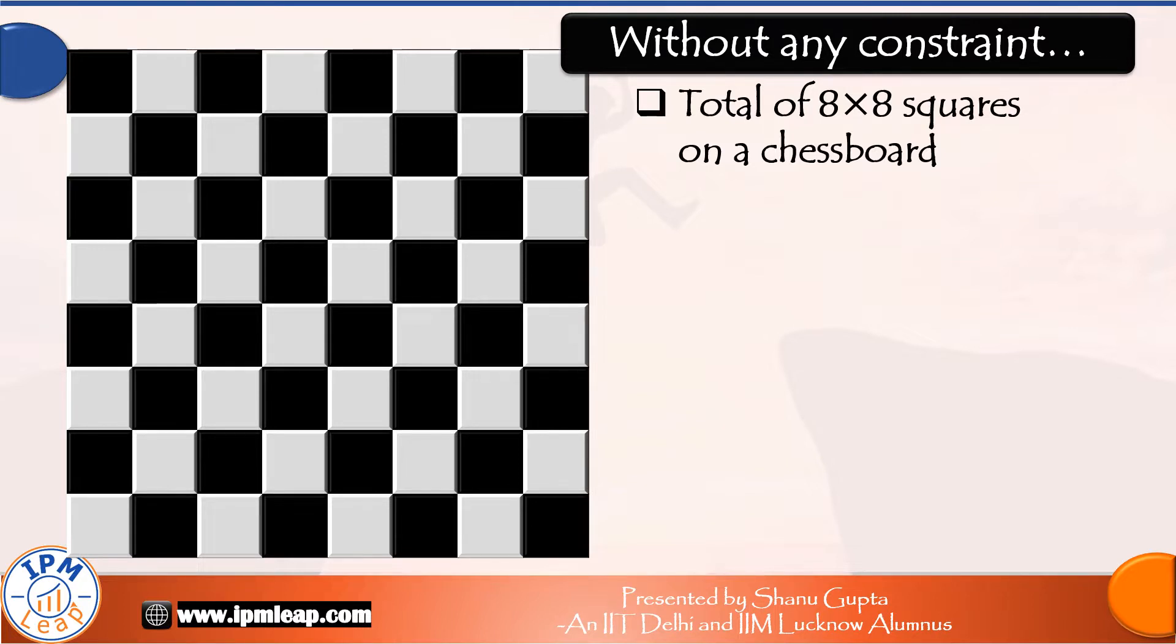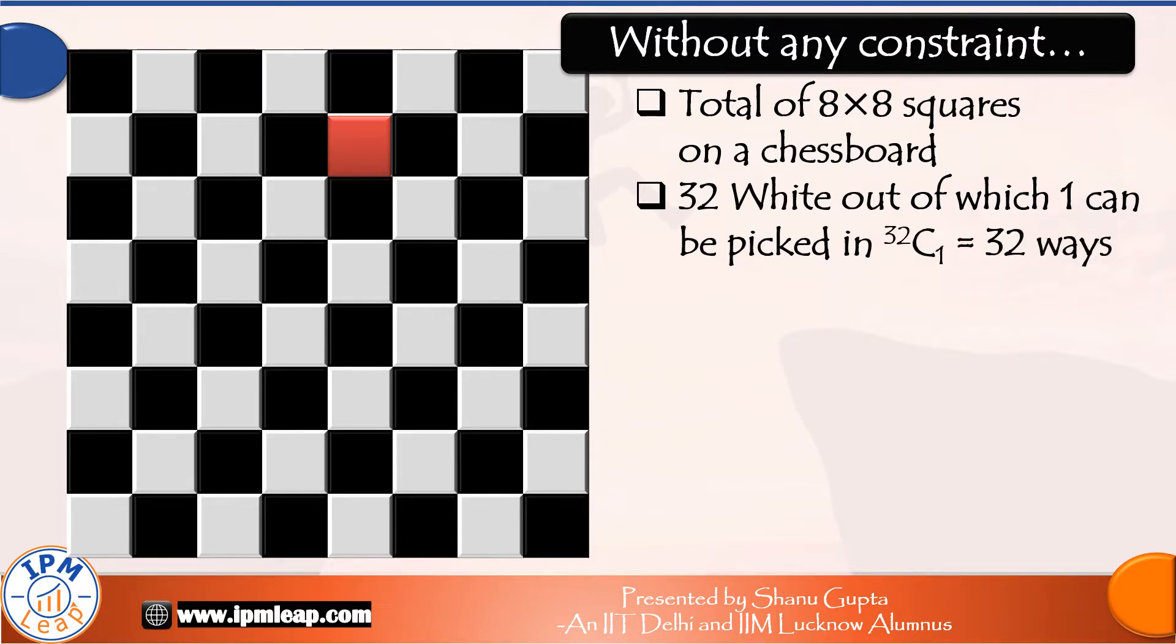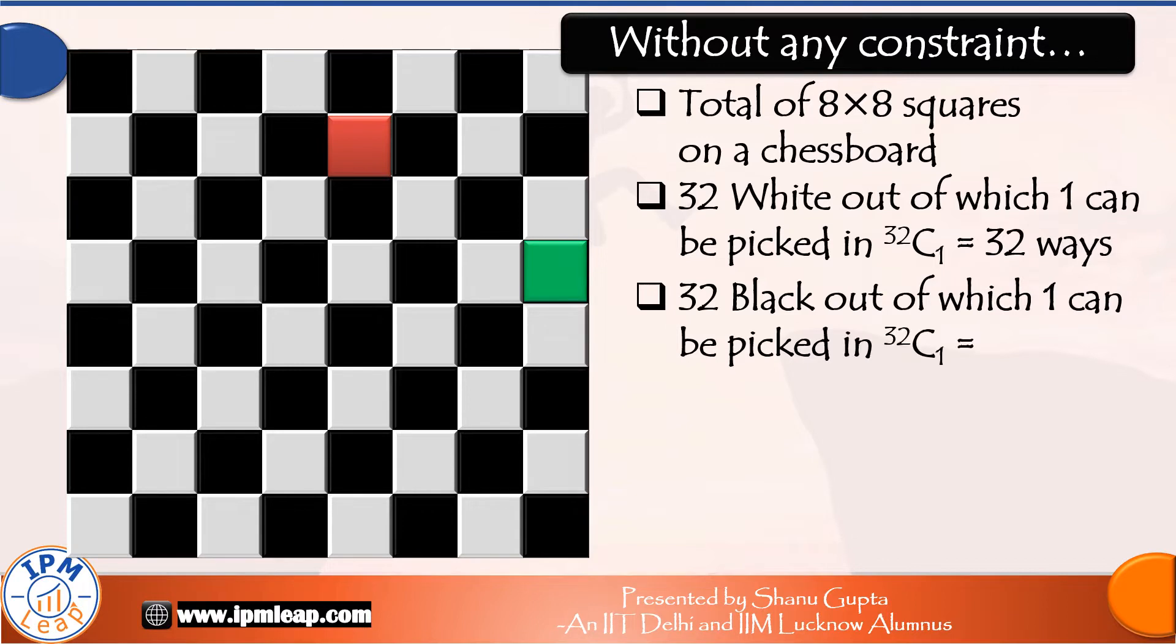So if there were no constraints and we had to pick one white square, we could do it in 32 ways because we could pick any one out of the 32 white squares. And if we were allowed to pick any black square irrespective of which white square we have picked, we could do that in 32 ways again because we would select any one out of 32 black squares.